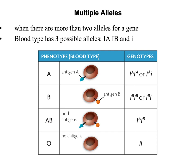The next type of non-Mendelian inheritance is known as multiple alleles. For Mendel, traits were either-or — dominant or recessive. Here, there are more than two alleles for a gene. A great example is blood type, which has three possible alleles: A, B, or O — referred to as IA, IB, and little i.